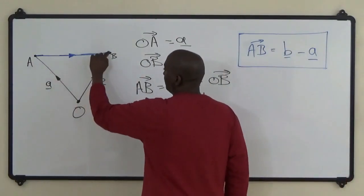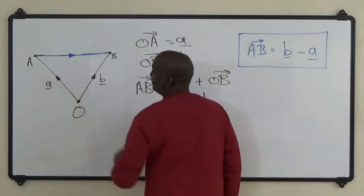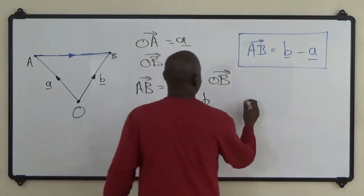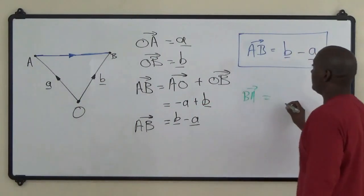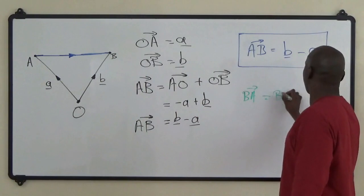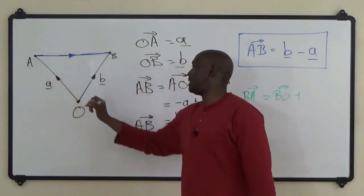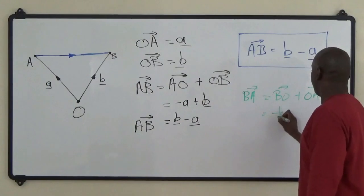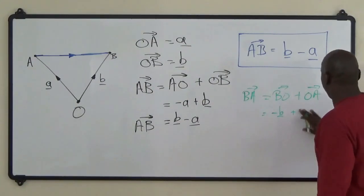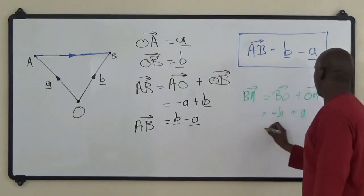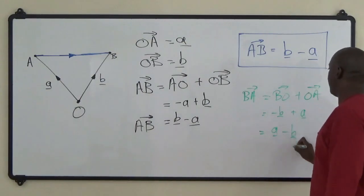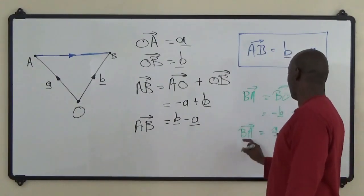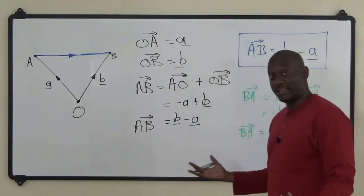By the same token, if we wanted to find BA, we could say BA is the same thing as moving from B to O and then from O to A. Let me put it in green. BA equals BO plus OA. B to O is minus b, so that equals minus b plus a, which is the same thing as a minus b. So in the same way that AB was b minus a, by the same token BA is a minus b. You recognize the pattern?